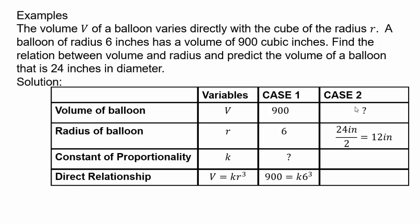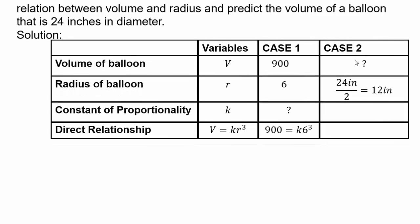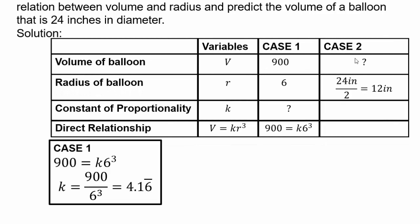Yes, you're allowed to use calculators here. Go ahead and do that. In case 1, you should have seen 900 equals k times 6 cubed. And so we divide by the 6 cubed to get our k. And I used my calculator and got that as my k.